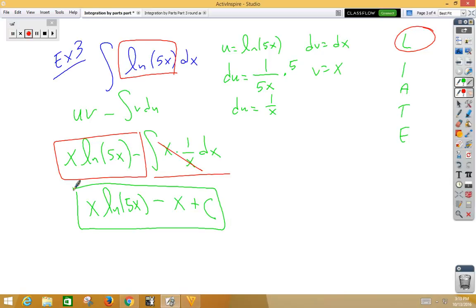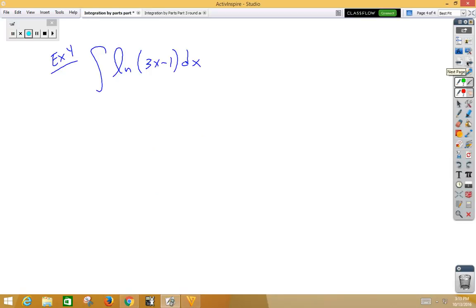Last example. This video is a little longer than others, but this is a slightly more difficult concept. Again, we're using LIATE to help us. Are there any logarithms? Yes, there is. So u is natural log of 3x minus 1. dv would be dx. v would be x. du, now we have to do chain rule again, so derivative of the outside, don't change the inside, times the derivative of the inside. So du, this time, is 3 over 3x minus 1.